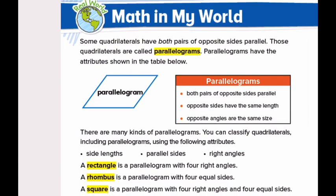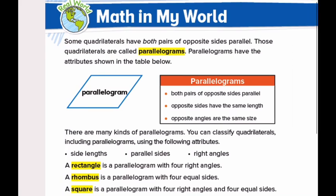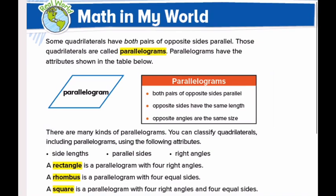Now, there are many kinds of parallelograms. You can classify quadrilaterals, including parallelograms, using the following attributes: side length, parallel sides, and right angles. In a rectangle, we have four right angles. A rectangle is a parallelogram because all opposite sides are parallel, and the attribute of a rectangle is that it has four right angles.